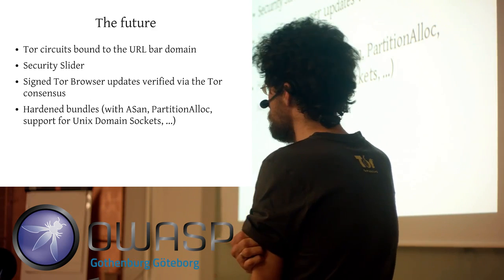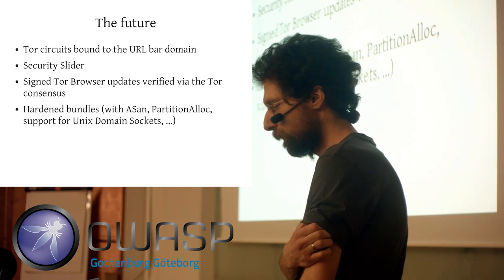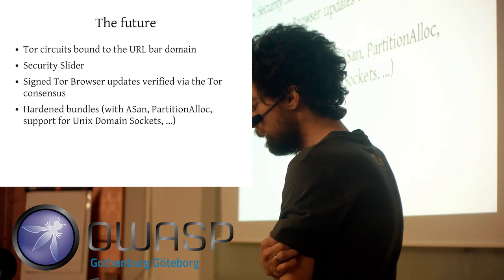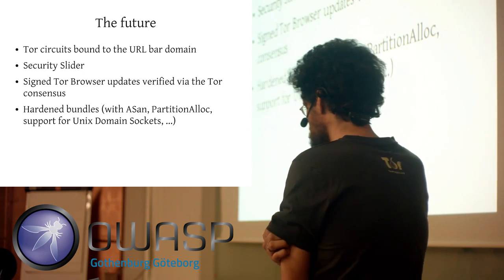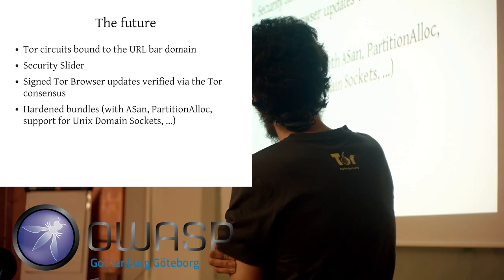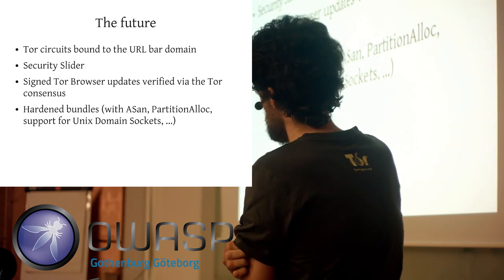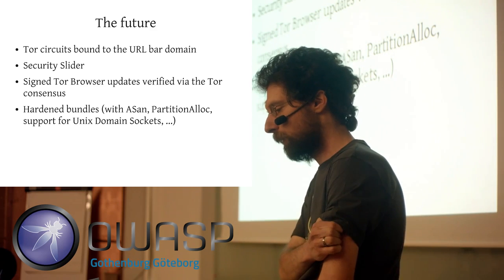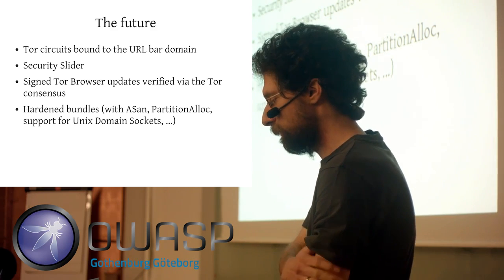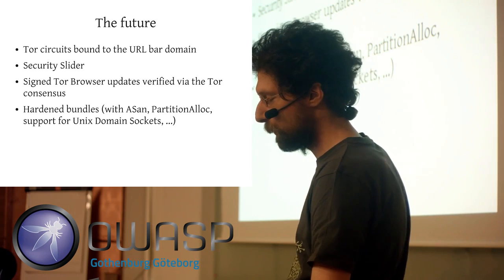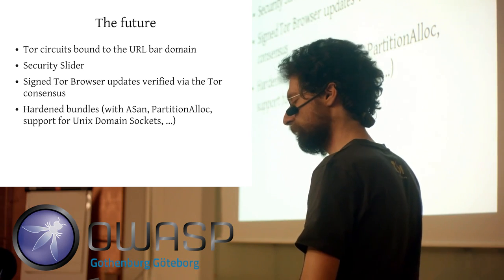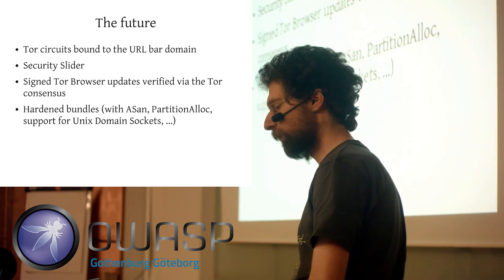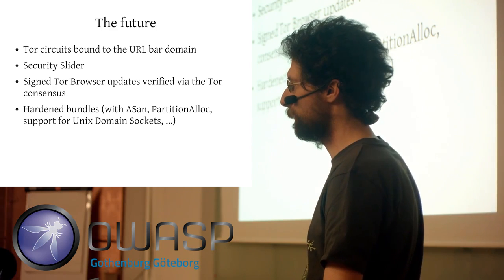The next stable release is coming in two weeks. We implemented a feature where Tor circuits are bound to the URL domain. That means if you're going to a.com, you go via a certain circuit. But if you're going to b.com in a different tab, you take a different path through the Tor network. This makes it much, much harder for exit relays to correlate your traffic.